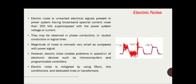Now let us discuss another type of power quality issue that distorts the waveform. We have been discussing five things that affect the purity of the waveform. We first discussed DC offset, then harmonics, and last we discussed notching. Now it is electrical noise. Electric noise is unwanted electrical signal present in the power system having broadband spectral content lower than 200 kilohertz, superimposed with the power system voltage or current.